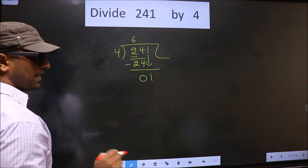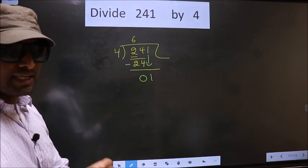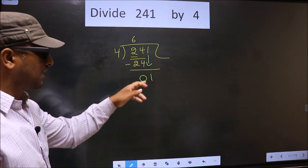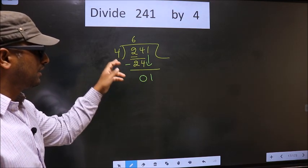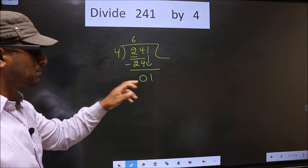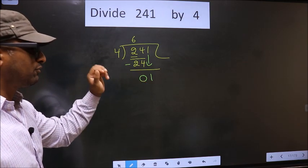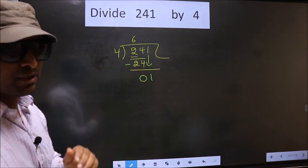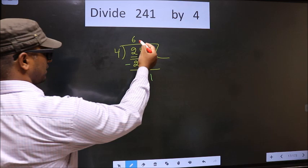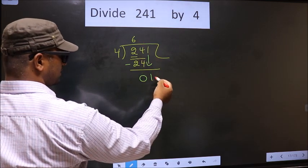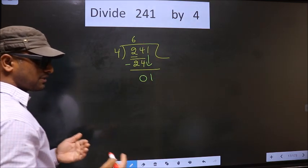This is where the mistake happens. And the mistake is this one. Here we have 1. Here we have 4. 1 smaller than 4. So, what many do is they put a dot and take 0 here. Which is wrong.